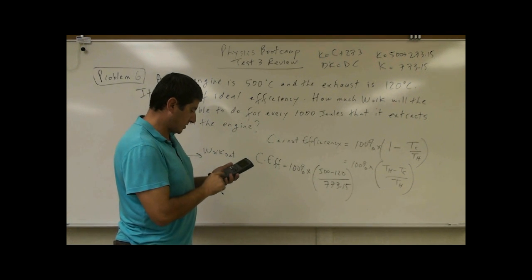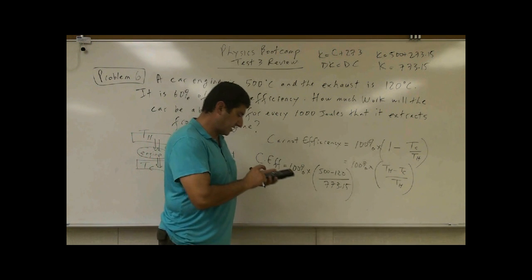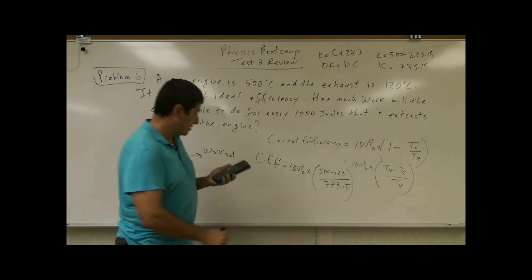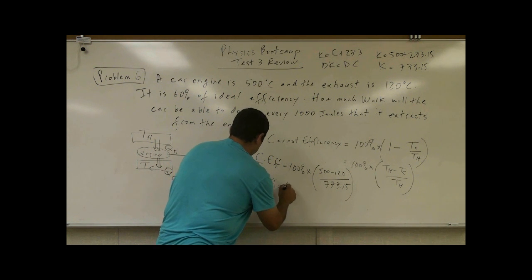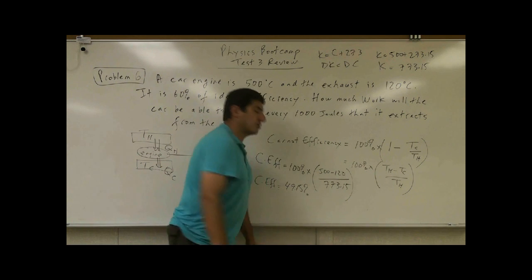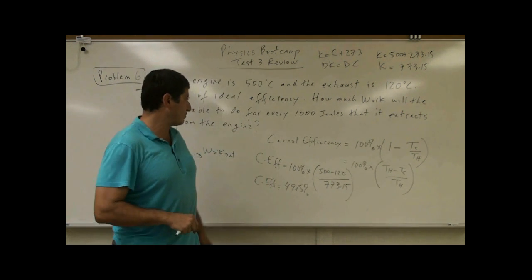500 minus 120. That gives you 380 divided by 773.15 times 100. And you have the Carnot efficiency is equal to 49.15%. So the highest efficiency that this car can run at is 49%.